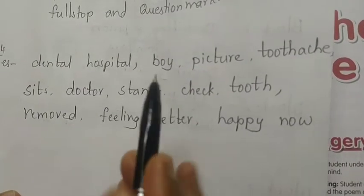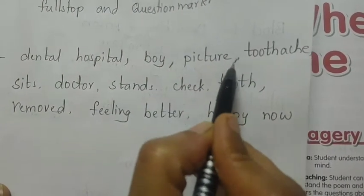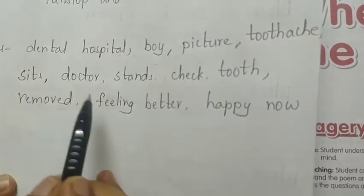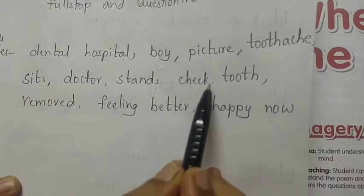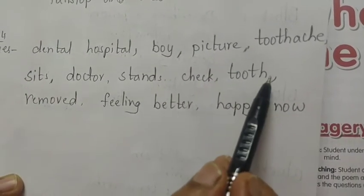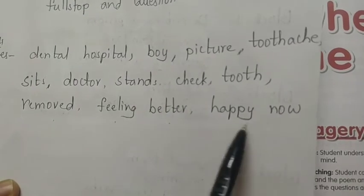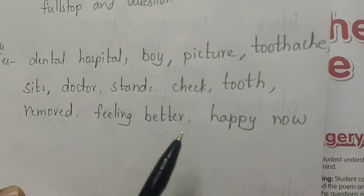The teacher repeats the clues: dental hospital, boy, picture, to take, sits, doctor, stands, check, tooth, removed, feeling better, happy now. With these clues you have to write the story. What is happening there.